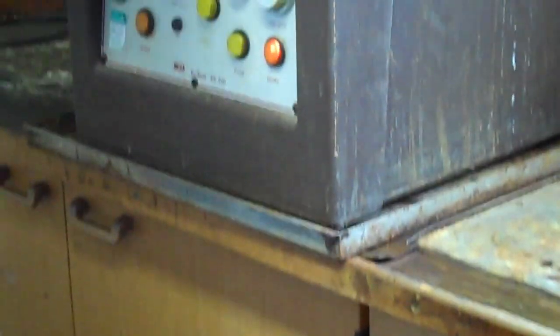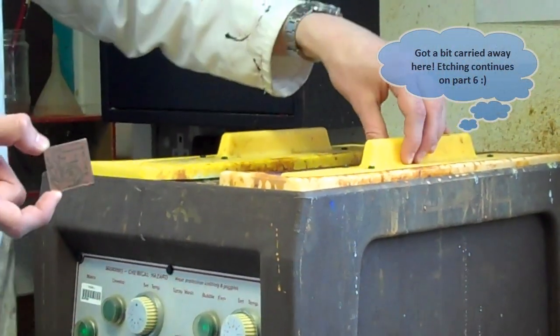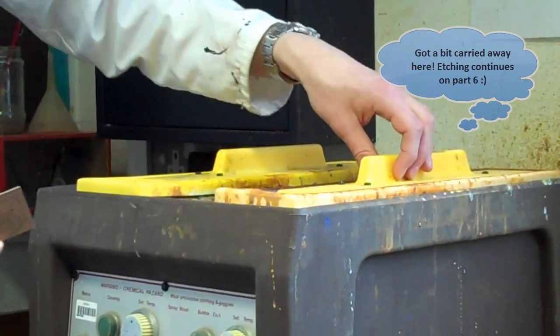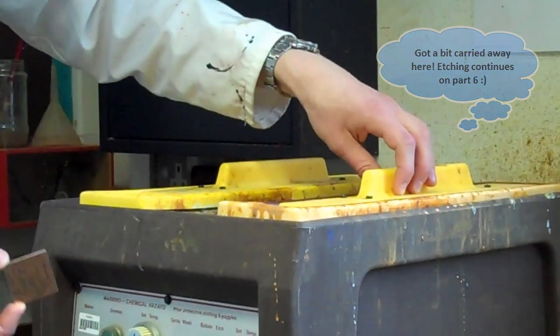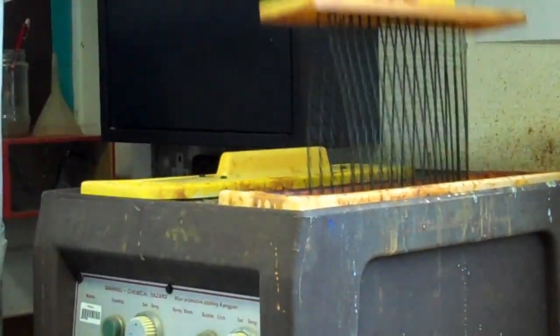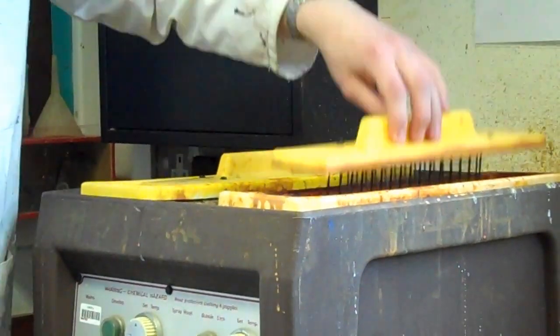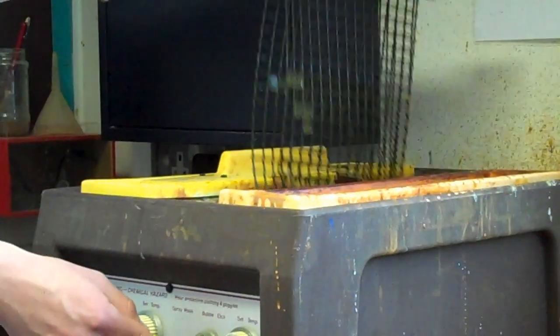So now what I'm going to do is put it into the etch tank. Again, it depends on how old the solution is and how exhausted it is as to how long it takes to etch. But you should see an instant change in the color of the board if I just wash it again.